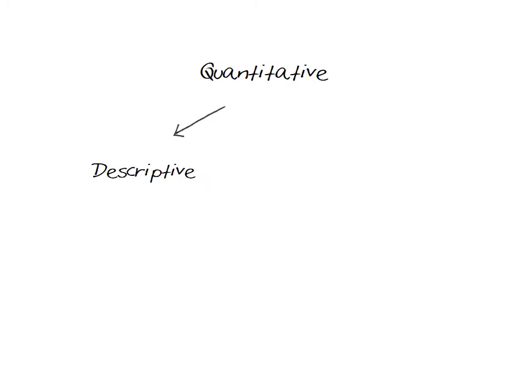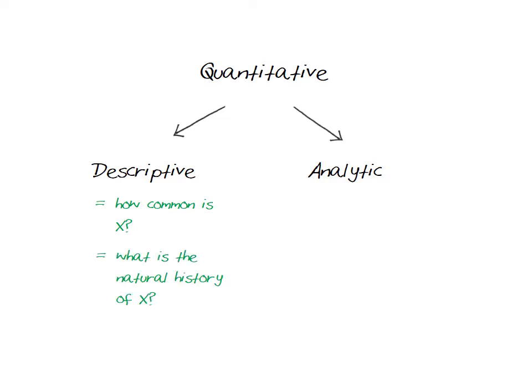Quantitative studies can be further divided into studies that are descriptive and those that are analytic. Descriptive studies describe how common something is, such as a particular disease or risk factor, and might also describe the course or natural history of a disease. Descriptive studies don't try to examine relationships between different variables — that is what analytic studies do.